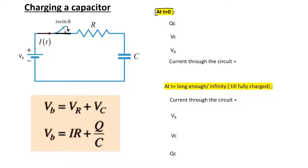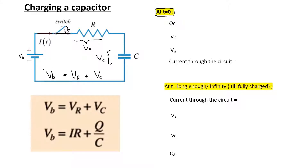Let's assume a scenario where I close this circuit. Closing means now the circuit is connected - the wires are connected, a closed circuit. So I'm going to look at T equals 0. T equals 0 means the moment I close this switch. Before going into that, let's look at the voltages in the circuit. We have R and C, a resistor and a capacitor, connected to this battery.